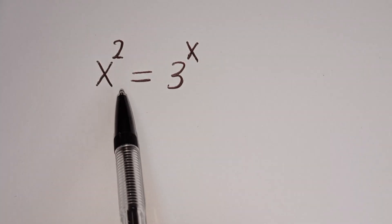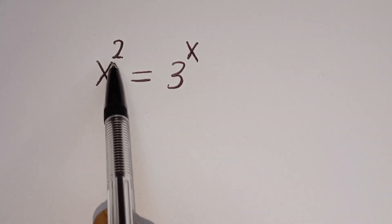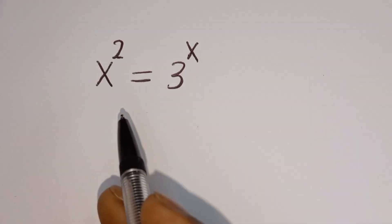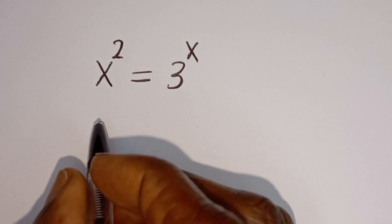Hello. How to solve for x in this equation: x squared is equal to 3 to the power of x. Solution.